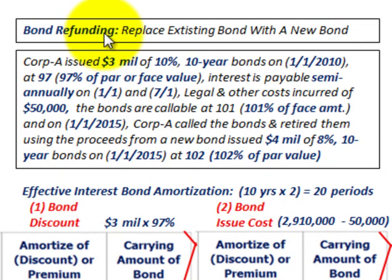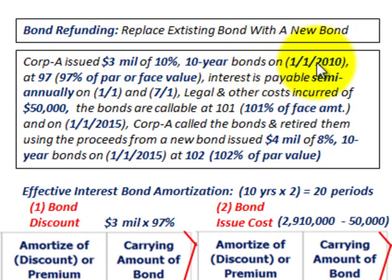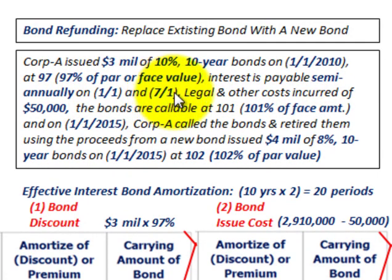What we're going to be looking at here is bond refunding — replacing an existing outstanding bond with a new bond. Corporation A issued $3 million worth of 10%, 10-year bonds on 1-1-2010 at 97% of par face value. Interest is payable semi-annually on 1-1 and 7-1 each year. Legal and other costs incurred were $50,000 for issuing those bonds — those are the issue costs.